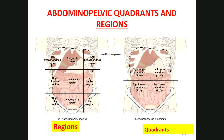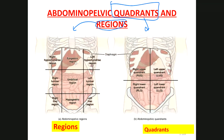Now we move on to quadrants and regions. The first thing is not to get them confused: if a question asks for quadrants, answer quadrants; if it asks for regions, answer regions. Quadrants are easy — they are four spaces made by drawing an imaginary line through the umbilicus and another one across it.